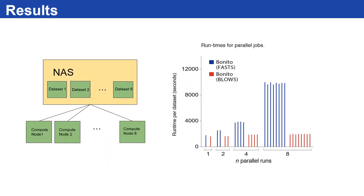In this setup, we have eight datasets that need to be base called in parallel. When a single dataset is base called in both SLOW5 and FAST5 format, there is no difference in the total run time. However, as we increase the number of parallel base calling runs, SLOW5 shows a consistent run time whereas FAST5 run time has increased by five times.